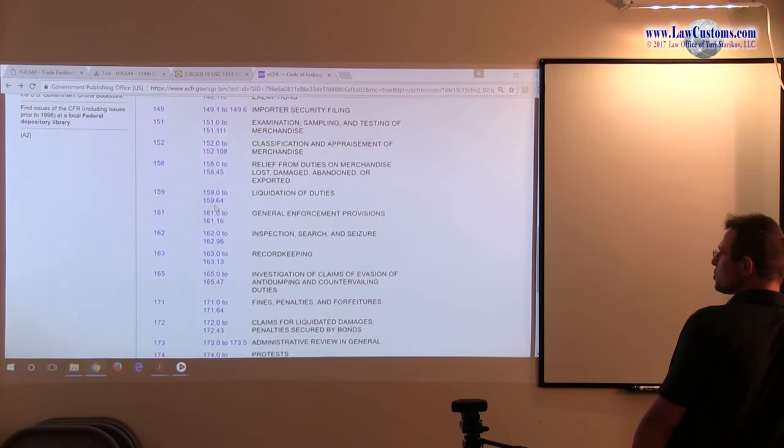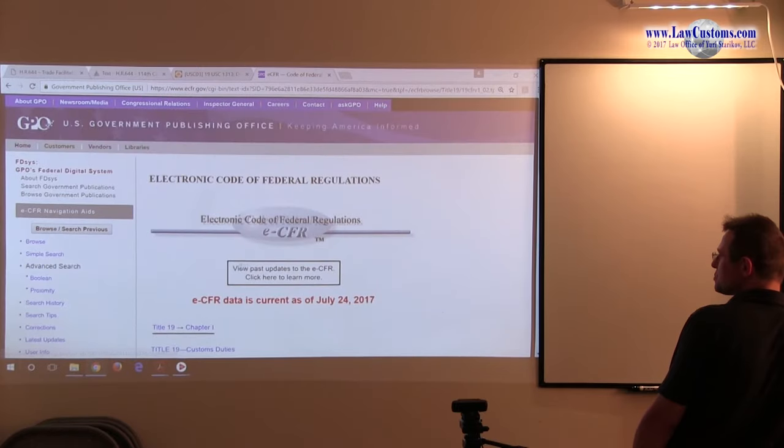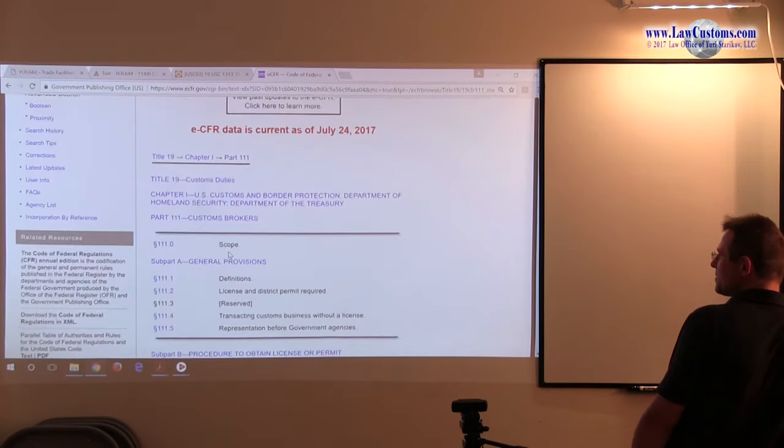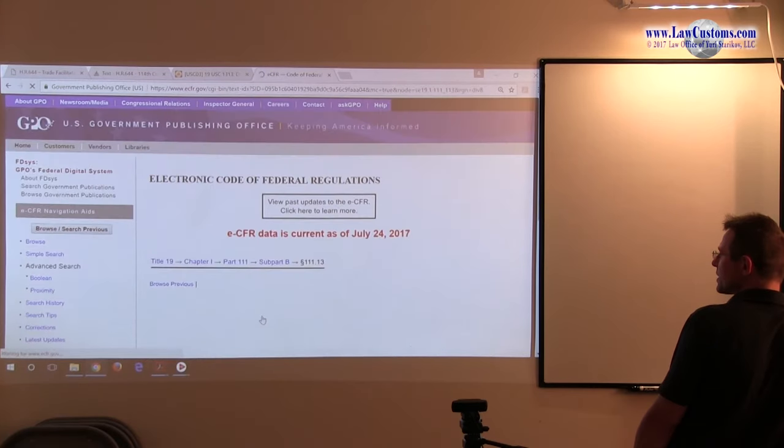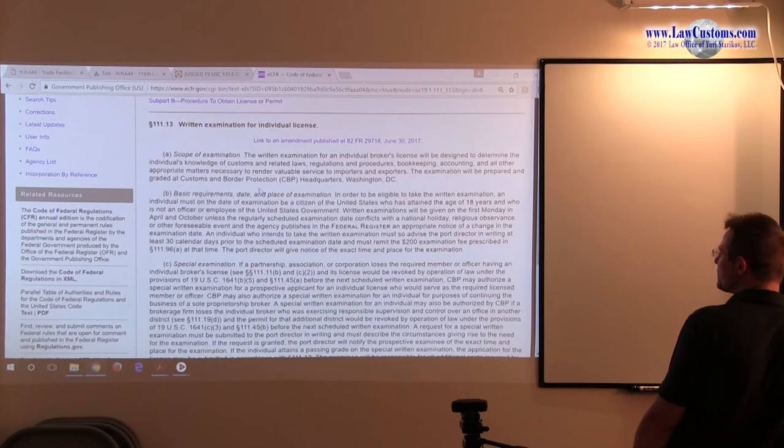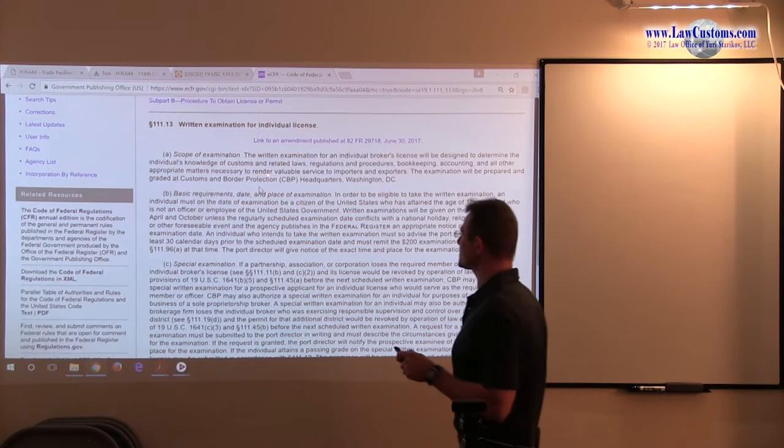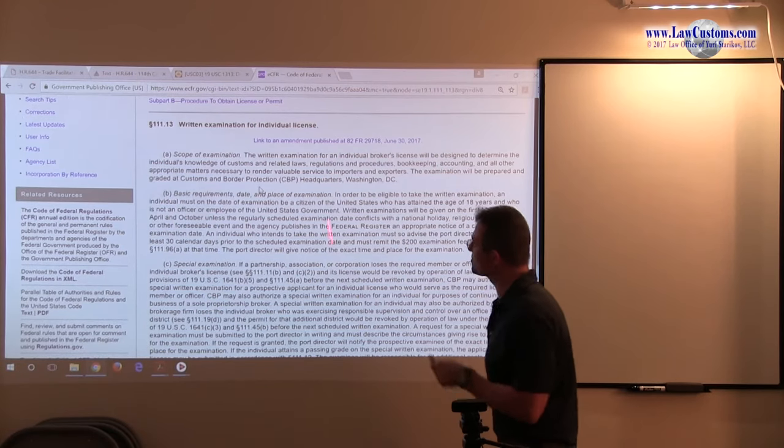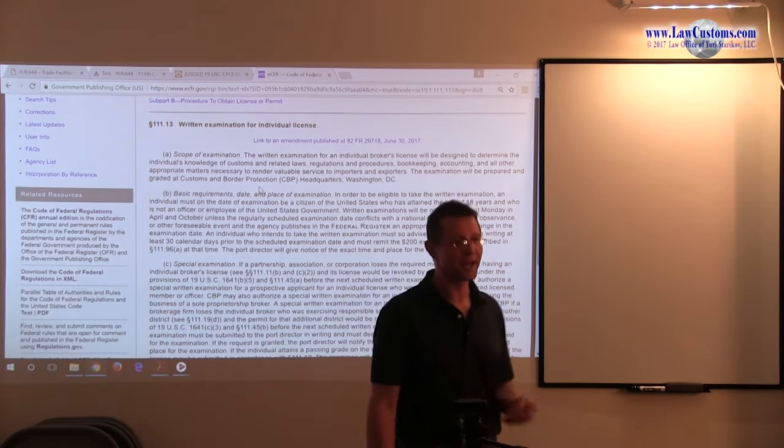let's see. So, 191 is the topic of the drawback, which we'll be discussing throughout today, but I wanted to take a step aside a little bit and just remind everyone that the purpose of the license customs broker examination is described on the 113 as to determine the individual's knowledge of customs laws and related laws, regulations and procedures, bookkeeping, accounting, etc. Laws come before regulations because regulations are based on laws. So, if one demonstrates knowledge of laws, then one shows the superior knowledge. And at the same time, because changes,